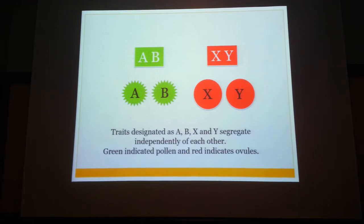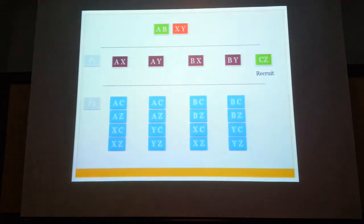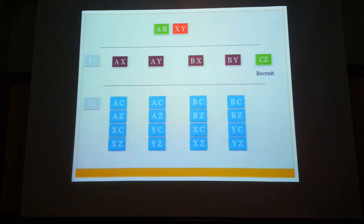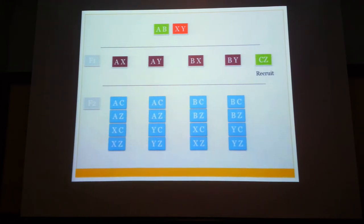Conventionally you assume Mendelian inheritance. So you have A, B, X, Y and you will get various combinations of A, B and X and Y. This is the Mendelian inheritance pattern.